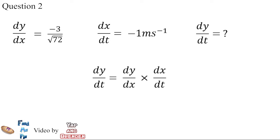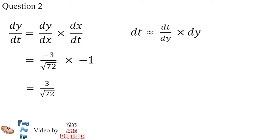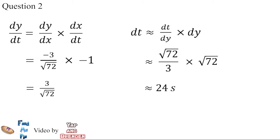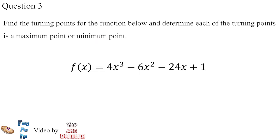Substituting negative 3 over the square root of 72 and negative 1 into the equation, we get 3 over the square root of 72. By using the approximate change formula, we can obtain dt is approximately equal to dt/dY times dY. By solving the equation, we can get dt is approximately equal to 24 seconds. So according to the calculation, the ladder will take 24 seconds to fall down completely.